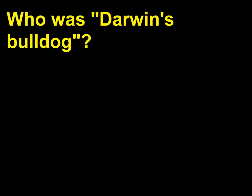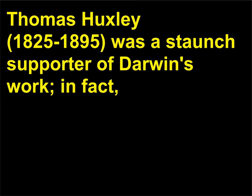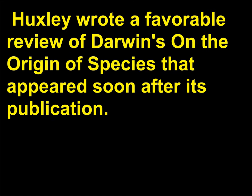Who was Darwin's bulldog? Thomas Huxley, 1825–1895, was a staunch supporter of Darwin's work. In fact, Huxley wrote a favorable review of Darwin's On the Origin of Species that appeared soon after its publication.